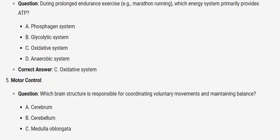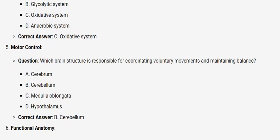Motor control. Question: Which brain structure is responsible for coordinating voluntary movements and maintaining balance? A. Cerebrum. B. Cerebellum. C. Medulla oblongata. D. Hypothalamus. Correct answer: B. Cerebellum.